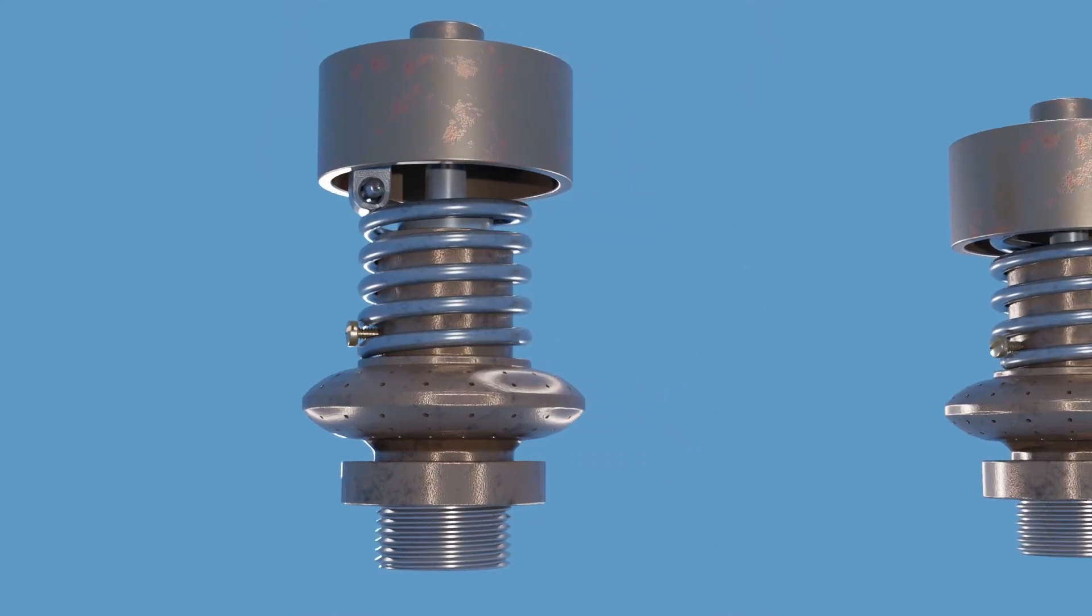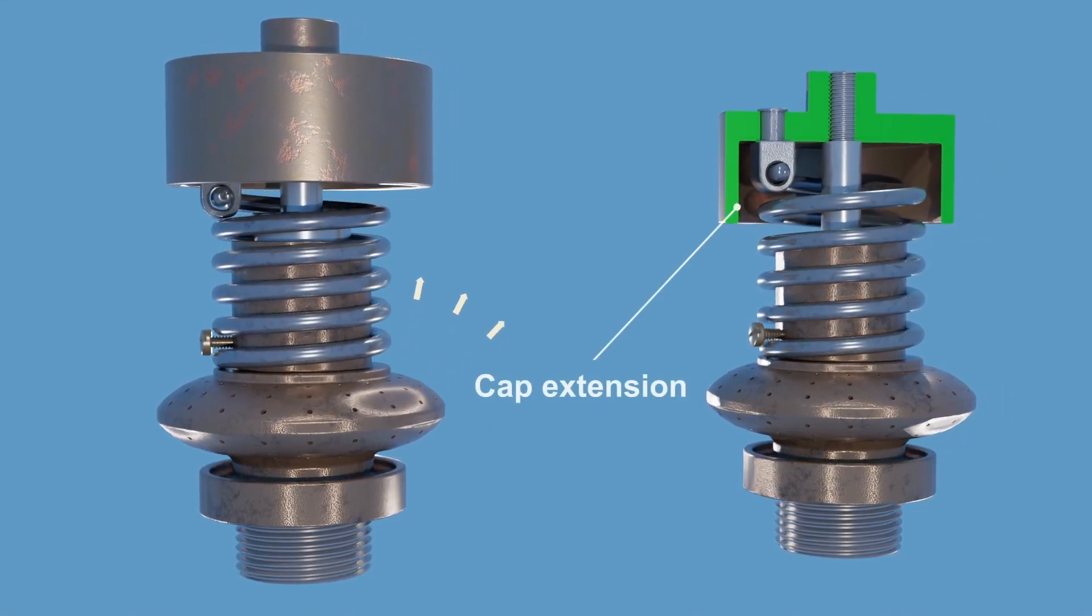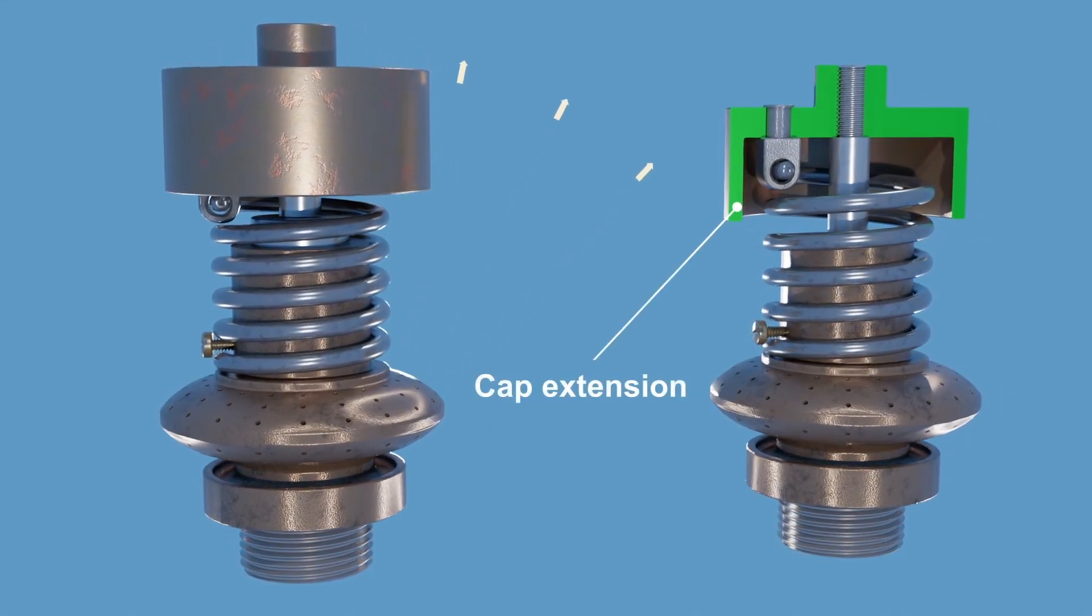To prevent the water jets from one sprinkler from hitting the fusible eye of an adjacent sprinkler and potentially delaying its melting, the cap extends downward.